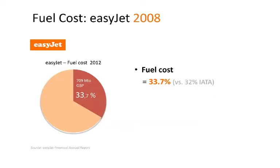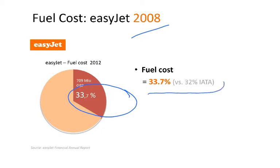Looking at EasyJet as a concrete example, also in 2008, it is on the same level — 33.7% of total revenue as the cost of fuel. This was very much in line with what was achieved across the industry, the 32% on IATA carriers.